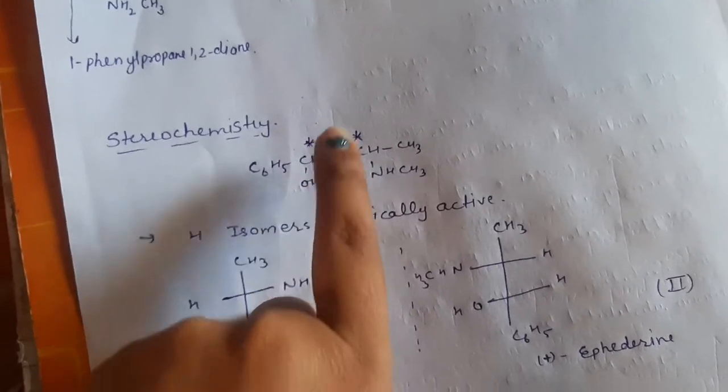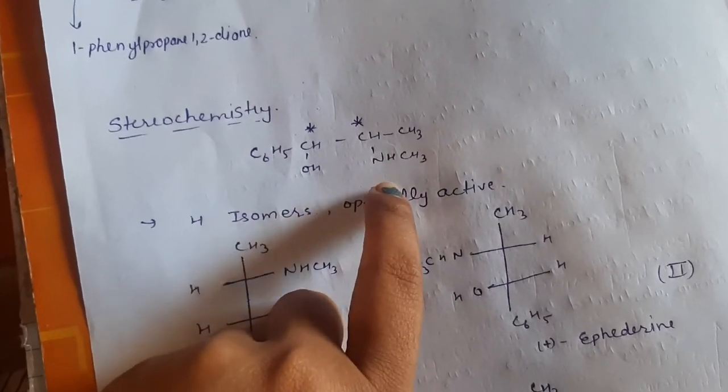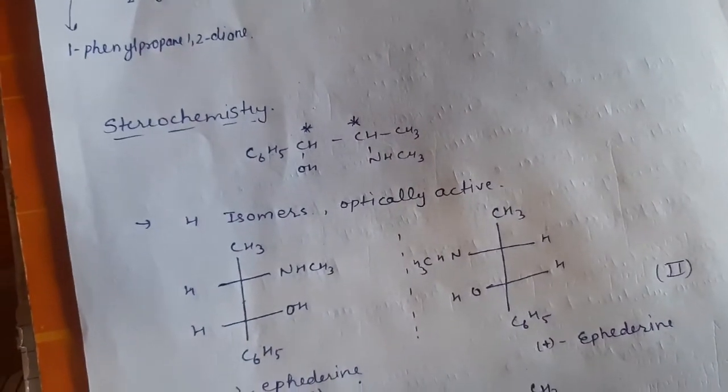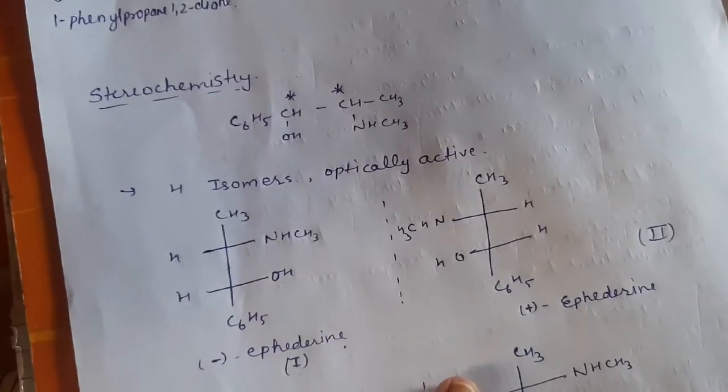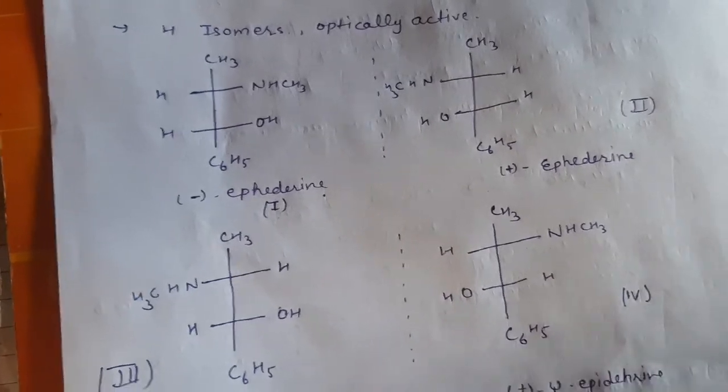So two stereocenters will give four optically active isomers and the structure of these four optically active isomers when OH and NHCH3 both are on same side then it is called minus ephedrine, if you draw a mirror image plus ephedrine.